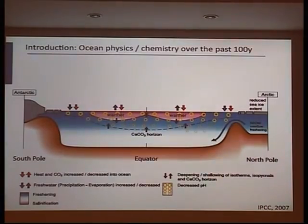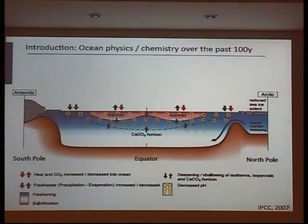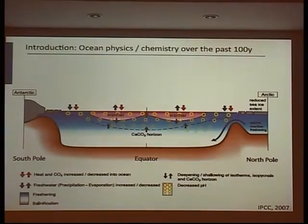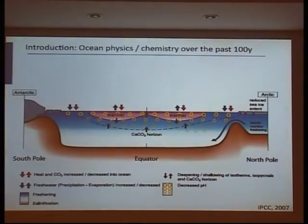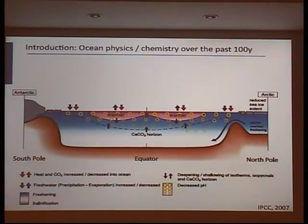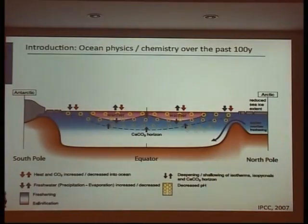This graphic comes from the last IPCC report in 2007, showing different physical and chemical changes happening in the ocean: a warmer ocean, mostly in the tropics but also at high latitudes; reduced sea ice extent; freshening of high and low latitude waters; changes in salinity; and decreasing pH shown by the yellow circles. You also see shallowing of the saturation horizon for calcite. The physical changes are due to increasing greenhouse gases, while acidification is due specifically to increasing CO2.